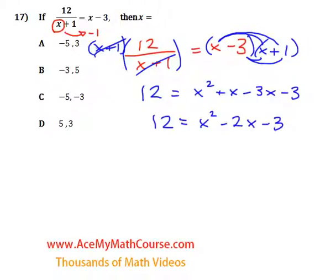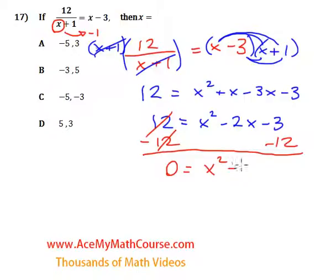Now what do we want to do? I want to subtract 12 from both sides of the equation. These cancel out. I get 0 equals x squared minus 2x, negative 3 minus 12 is negative 15.